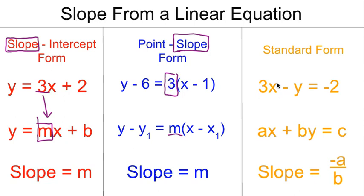Now standard form is where it gets not so easy. For slope-intercept and point-slope form, you can read the slope right out of the equation. For standard form, there's a bit of work involved. The slope from standard form is -a/b.